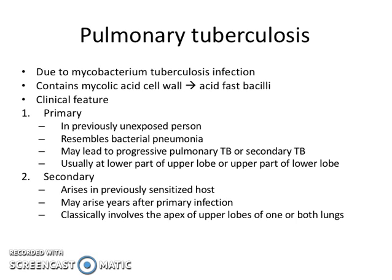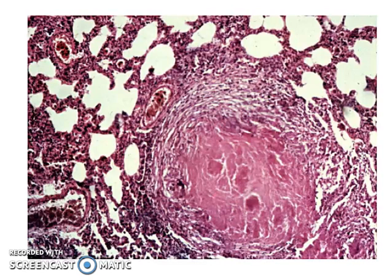Primary TB produces lesions at the lower part of the upper lobe or the upper part of the lower lobe, and it is associated with formation of Ghon focus and Ghon complex. Secondary TB arises in a previously sensitized host — patients who have already had primary TB — may arise years after primary infection, and classically involves the apex of the upper lobes of one or both lungs.